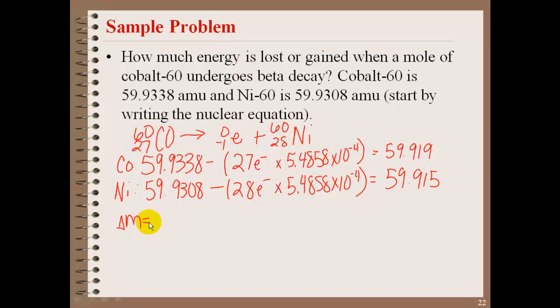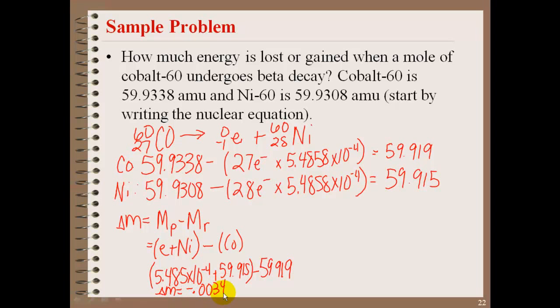Now, the change in mass will equal the mass of the products minus mass of reactants. So our products will be electron plus nickel minus our cobalt. Because remember, we have one electron, one beta particle. So this will be 5.4858 times 10 to the negative fourth, plus 59.915 minus 59.919. And that gives us a change in mass equaling negative 0.00345.